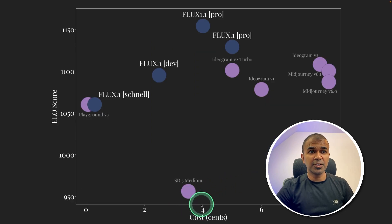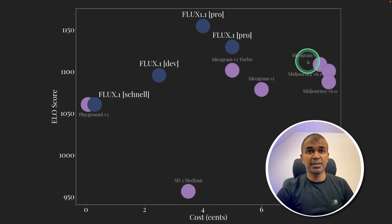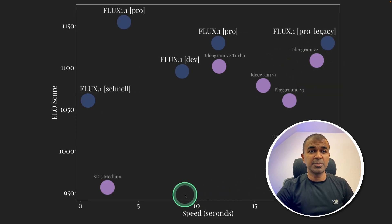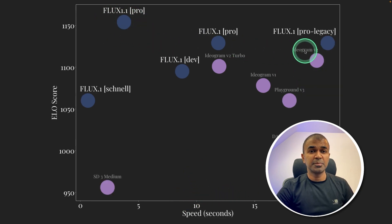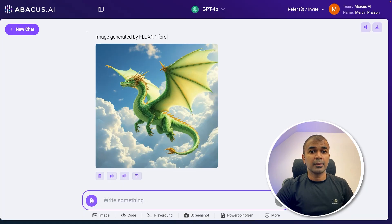Looking at cost, the 1.1 Pro is far cheaper than Ideogram or Midjourney 6.1. And in terms of speed, 1.1 Pro is much faster than any of its competitors.